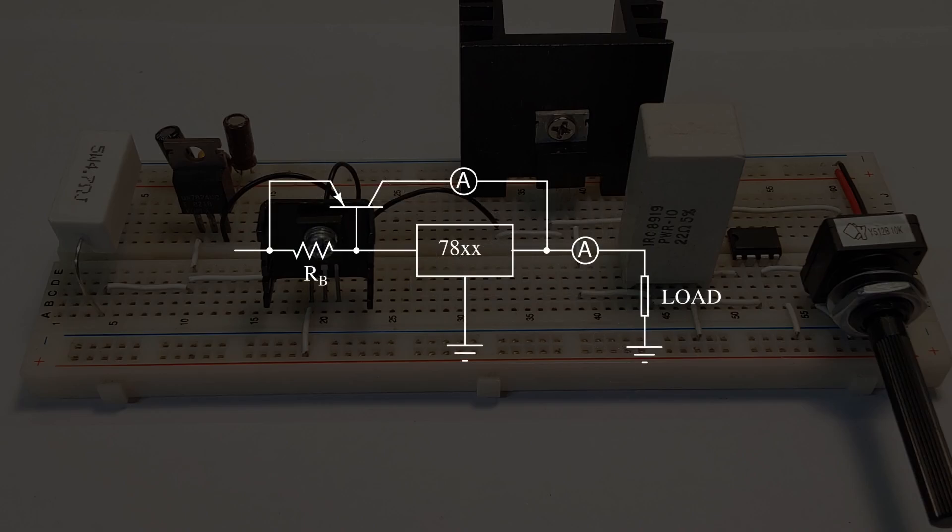The idea is simple. We'll sweep the load current and measure the total current and the current coming from the collector, which will give us the current coming from the regulator as well. And I'll spare you all the boring measurements.